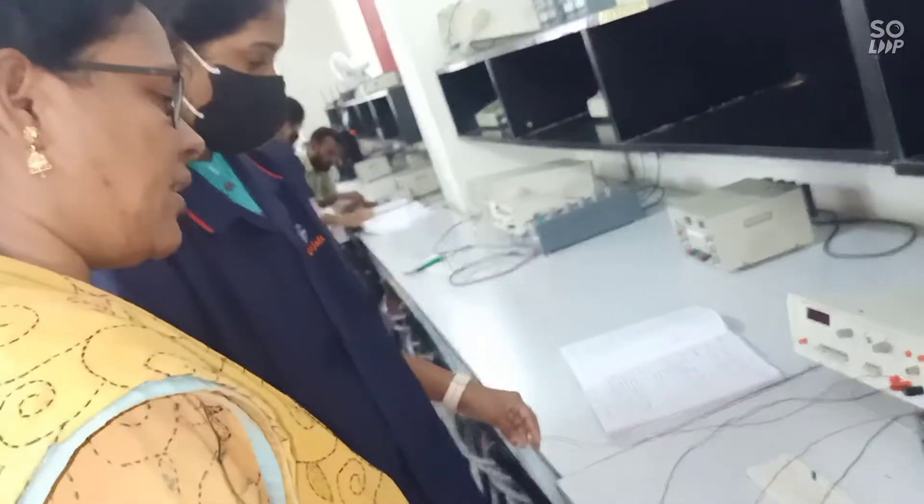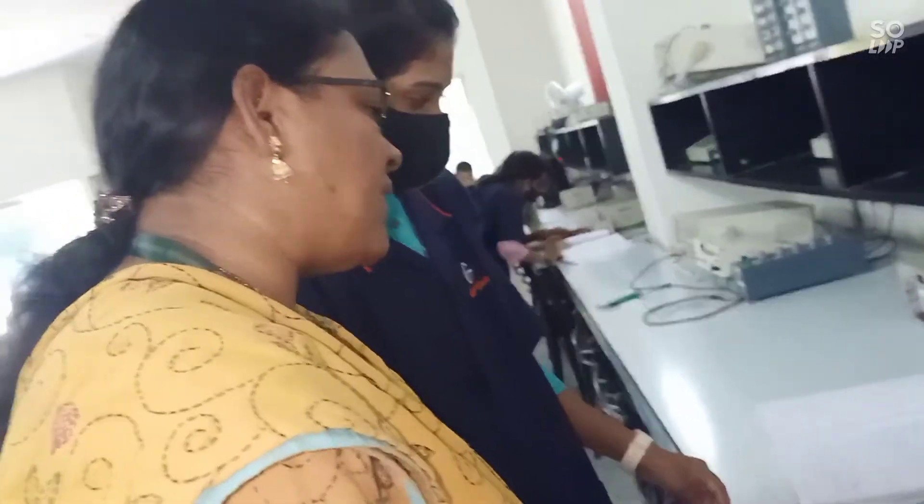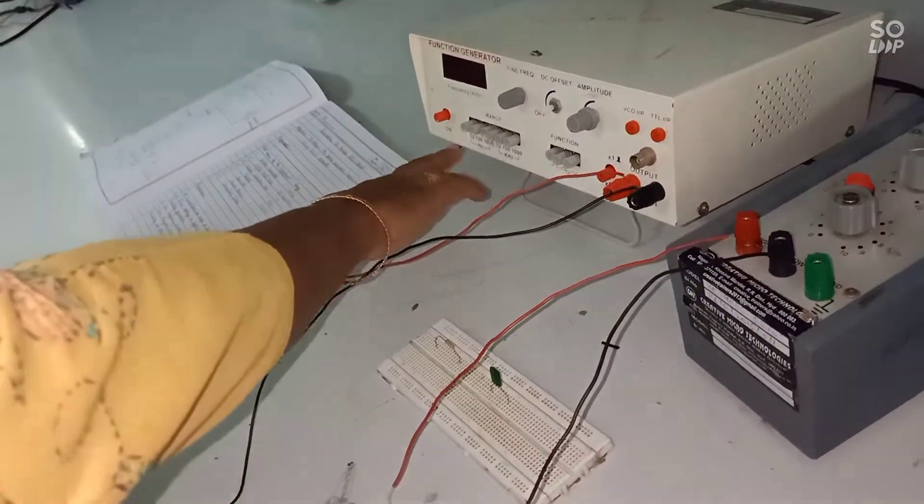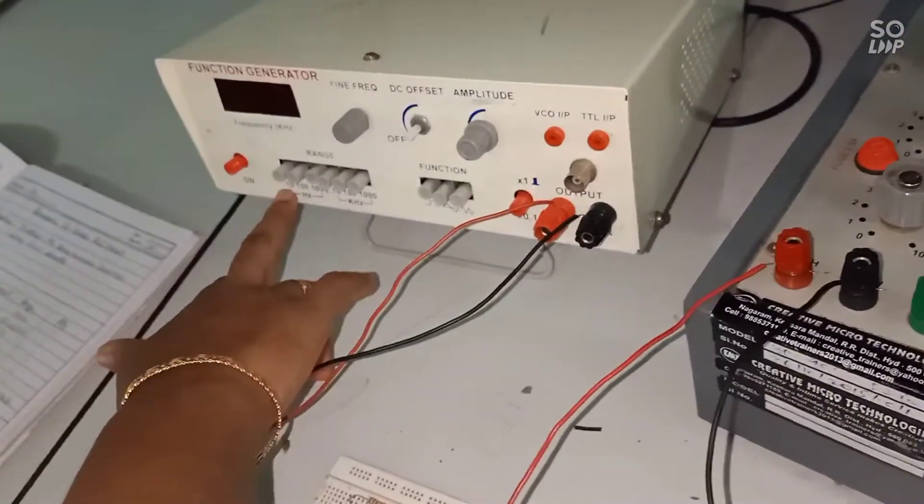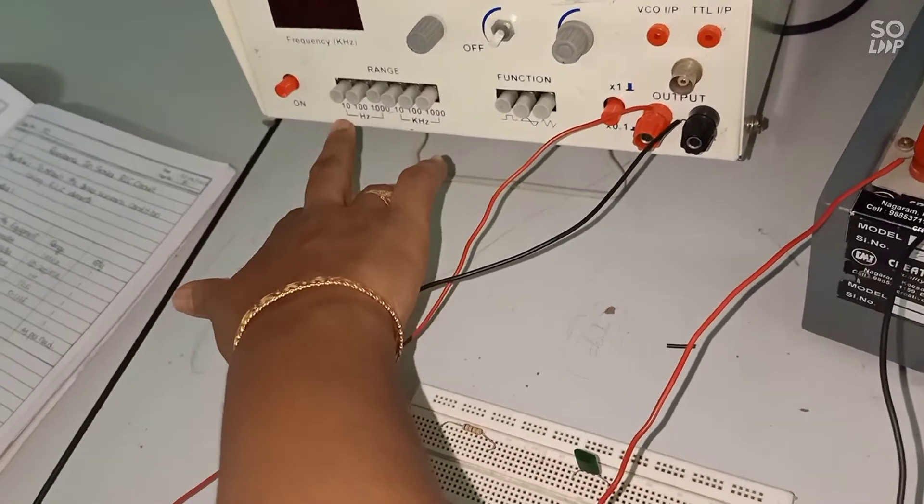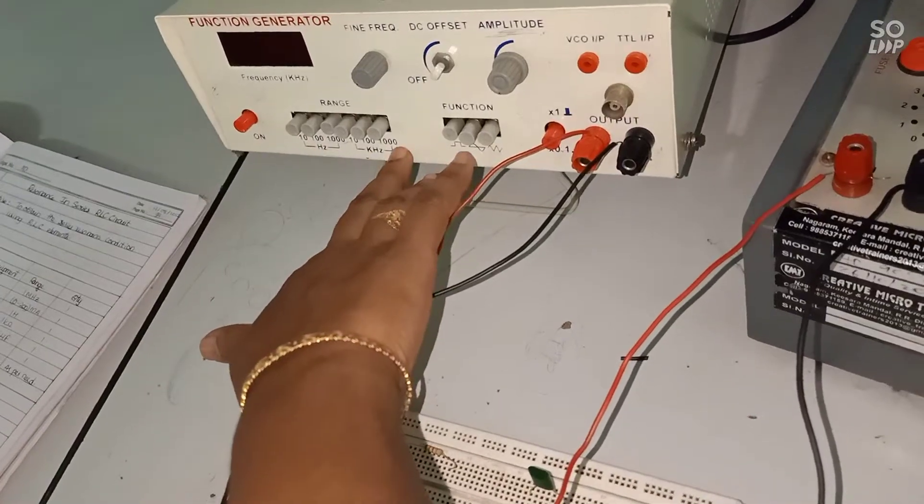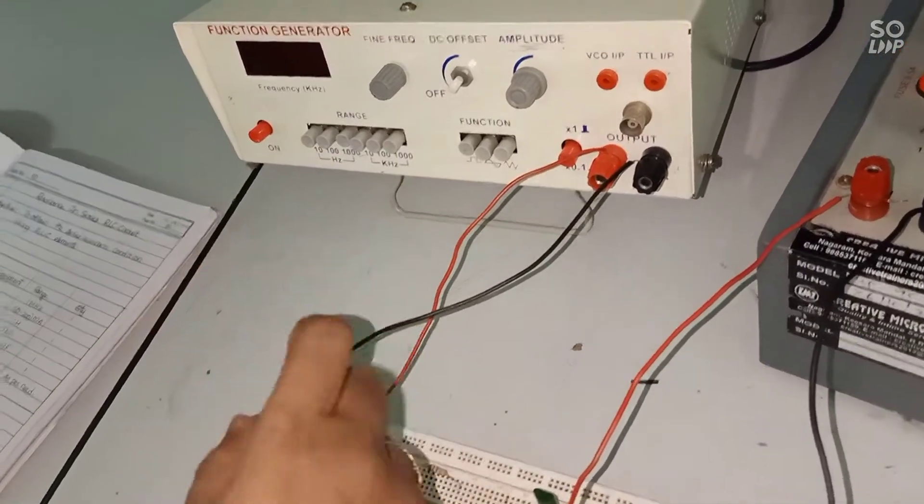We have a special apparatus which is required for conducting this experiment. Function generator has got these knobs which is the frequency knob where frequency variation is shown here from 10 Hz to 1000 kHz.